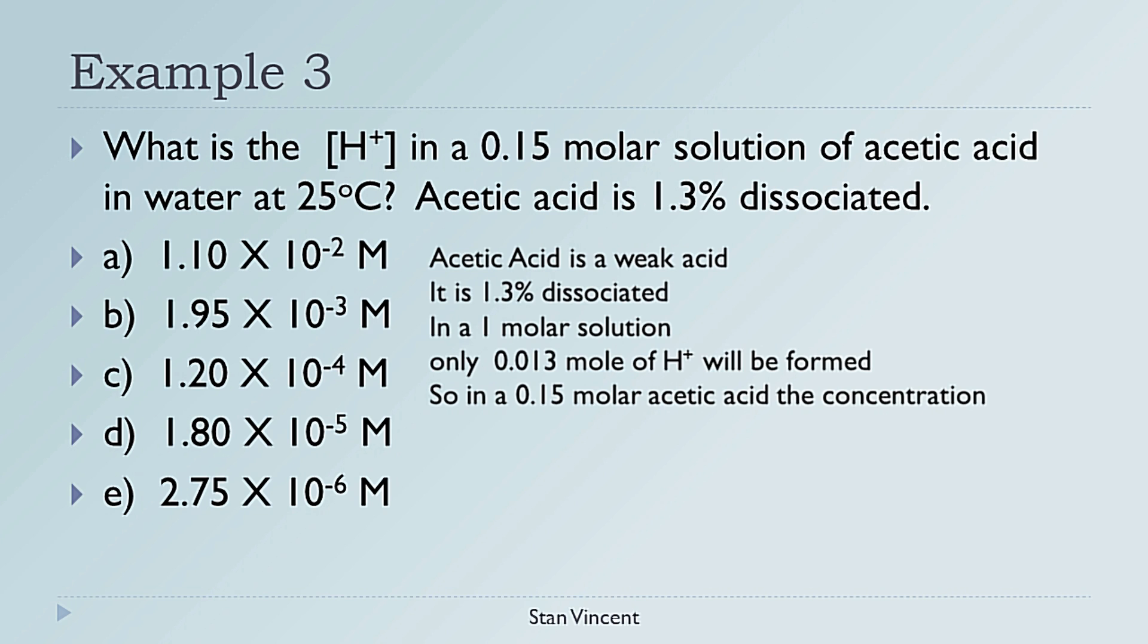In this problem we have a 0.15 molar solution of acetic acid, so the actual hydrogen ions present in solution is 0.15 × 1.3/100. This is equal to 0.00195 moles per liter of hydrogen ions, or 1.95 × 10⁻³ moles per liter of hydrogen ions. So your final correct answer is B.